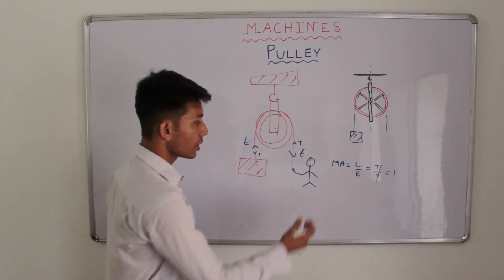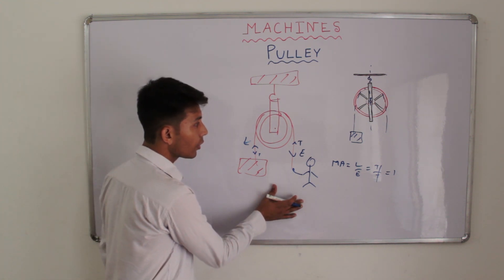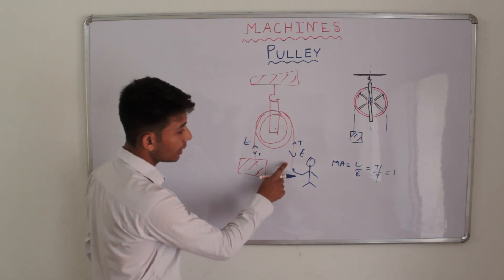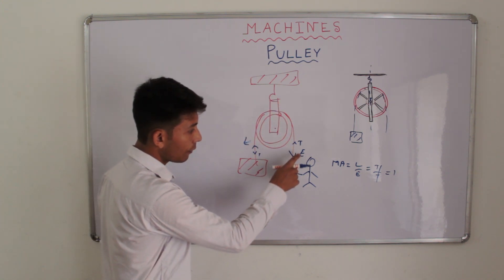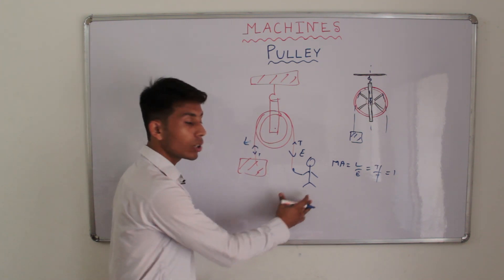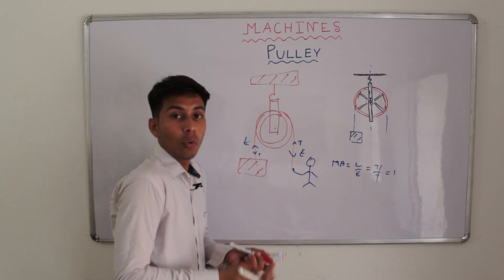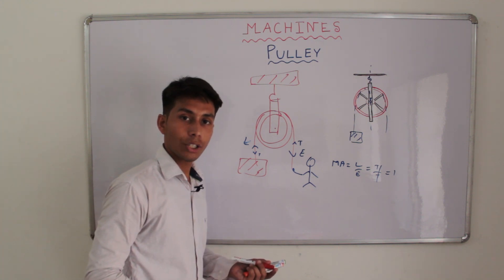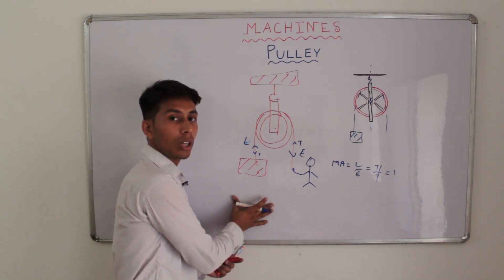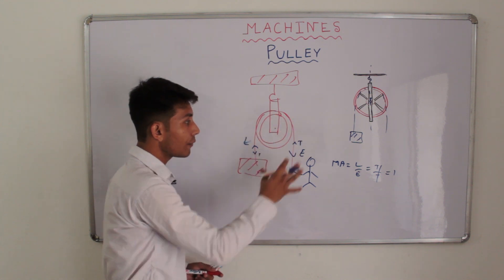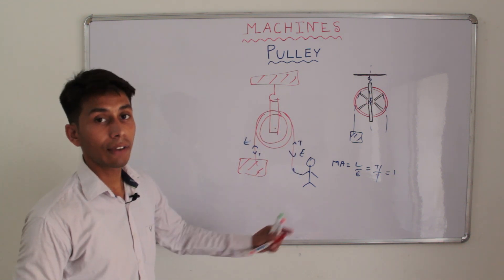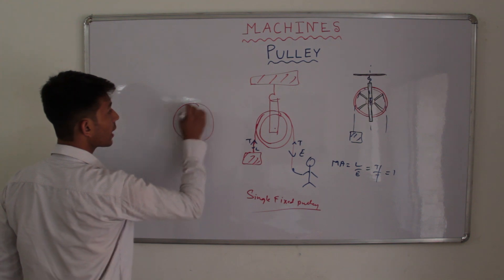Thus the question arises: why are we going to use a single fixed pulley? We can see in this case that the effort has to be applied in the downward direction. Thus we can utilize our own weight — we will be applying the effort in downward direction so we can utilize our own weight to pull the load. So a single fixed pulley is used to change the direction of effort. We will move on to the second category.